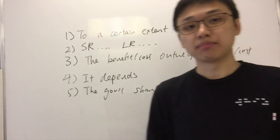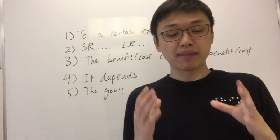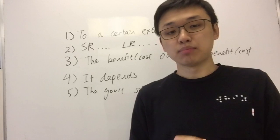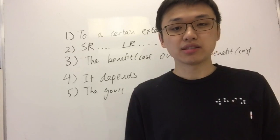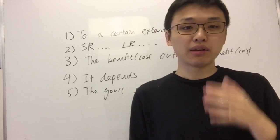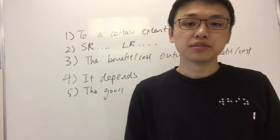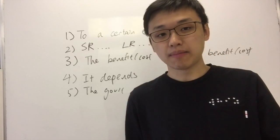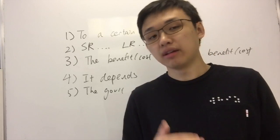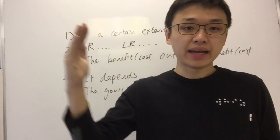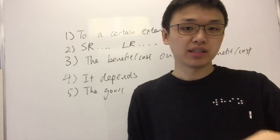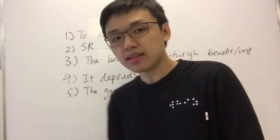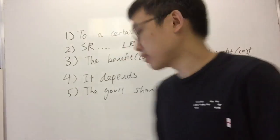Now let me give you another example. Let's say you're writing a macro IA. A very common topic for macro IA is monetary policy and interest rates. Let's say you're evaluating the use of interest rates to reduce inflation. If you increase the interest rate, aggregate demand falls and the average price level falls, so you have less inflation. Let's say you're evaluating that.